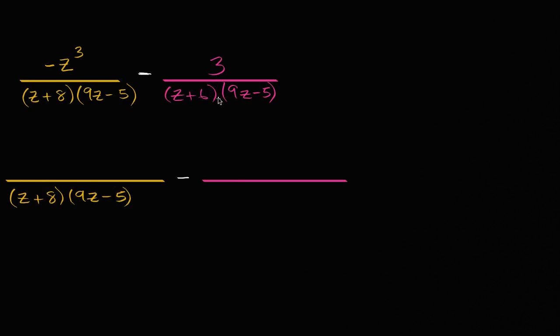And it's also gotta have both of these. Well, we already accounted for the nine z minus five, so it has to be divisible by z plus six. Z plus six.